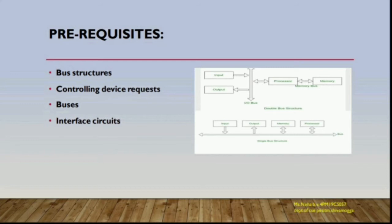For prerequisites, we need to learn about bus structure. A group of lines that serves as a connecting path for several devices is called a bus. In addition to the lines that carry data, the bus must have lines for address and control purposes. The main virtue of the single bus structure is its low cost and flexibility for attaching peripheral devices.